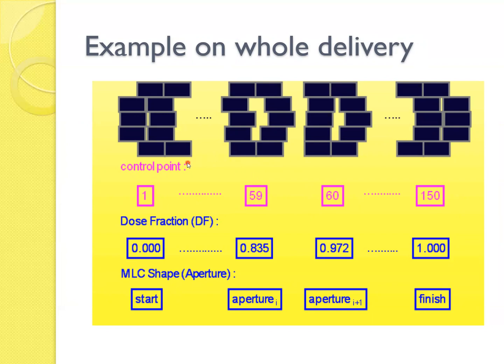So this is an example of how the delivery was done. The control point started with 1 and with 150. And the dose fraction was delivered during this process.